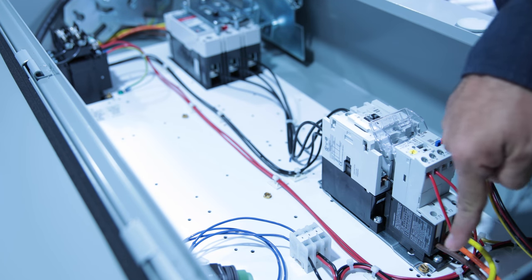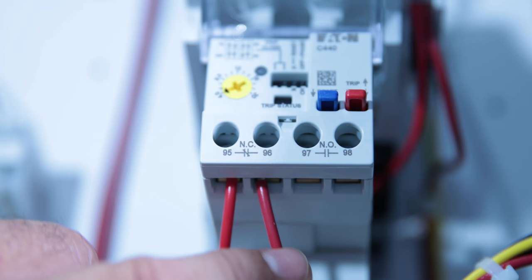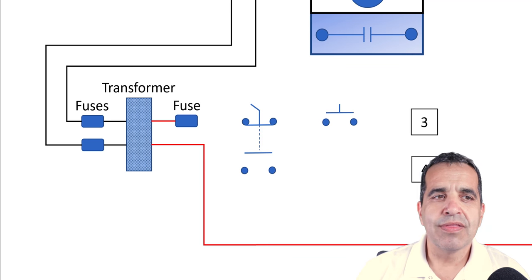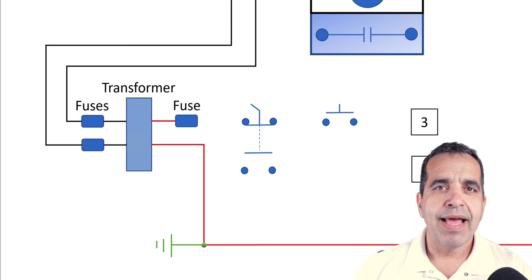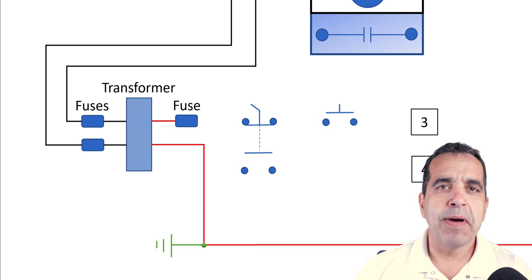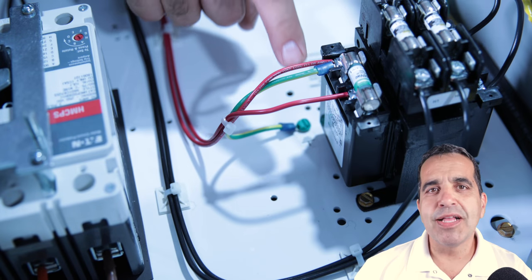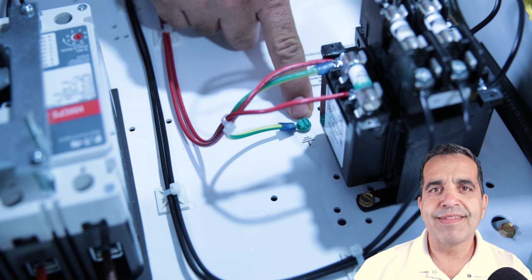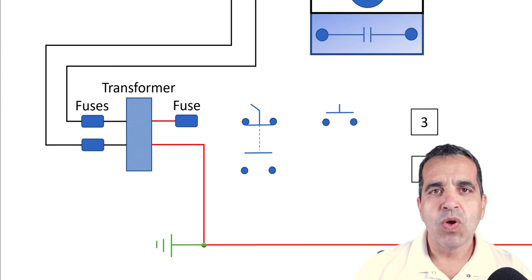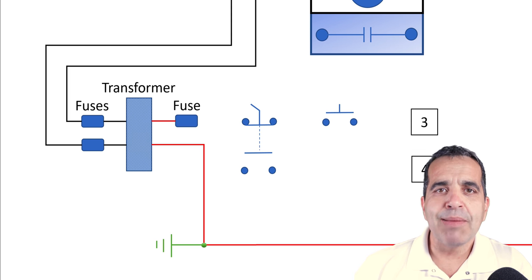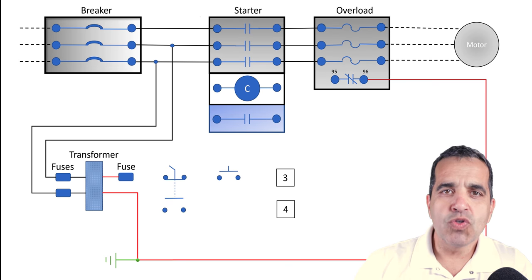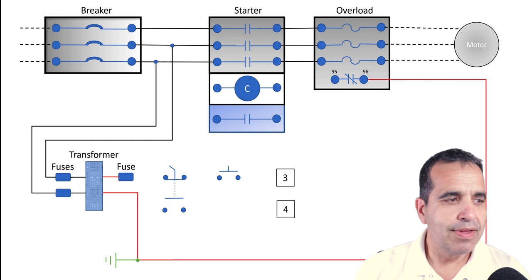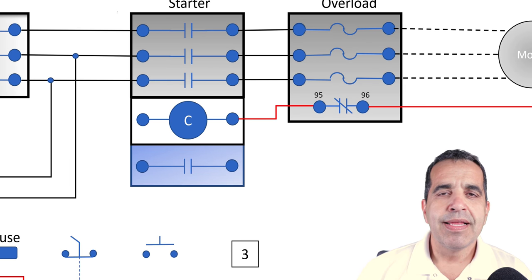The overload contact on terminal 96 is a normally closed contact. We're also showing our ground because our neutral is bonded at the transformer to the case of the pump panel. It needs to be bonded with the ground because a transformer is a separately derived system—we're deriving a new voltage, so we must bond the neutral once again after that neutral has been created.